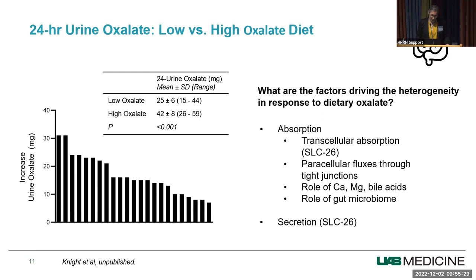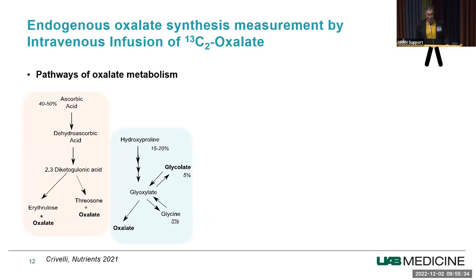Turning to endogenous synthesis, some sources have been identified over the years using stable isotope tracers. Ascorbic acid is a major source of oxalate, apparently accounting for about 40% of urine oxalate — a non-enzymatic pathway. There are also enzymatic pathways involving glyoxylate. Three major identified precursors are hydroxyproline, glycolate, and glycine, which together contribute about 30%. So it seems there may still be something missing in accounting for all endogenous oxalate production.